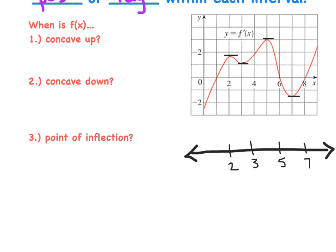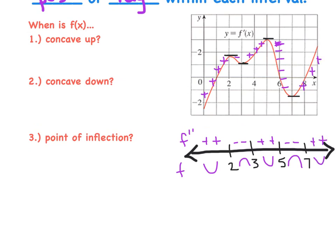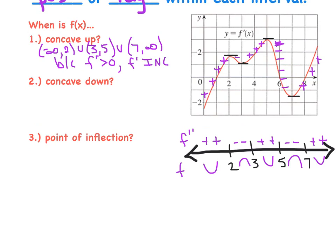Step two is determining whether the slope of f prime is positive or negative. If the slope of f prime is positive, then f double prime is positive; if the slope of f prime is negative, then f double prime is negative. All slopes before x equals 2 are positive, so f double prime is positive and f is concave up. Between 2 and 3, slopes are negative, so f is concave down. Between 3 and 5, slopes are positive, so f is concave up again. From 5 to 7, slopes are negative — concave down. And then slopes are positive once more past 7, so f is concave up. It's all about reading the slopes.